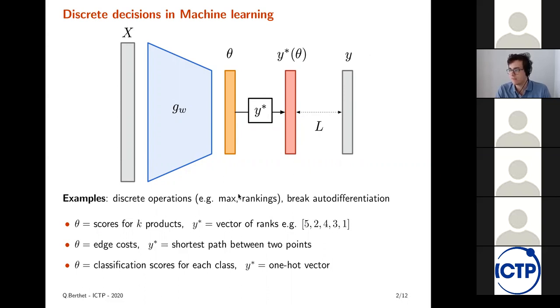And there are many discrete decisions in machine learning. So here you could consider a setting where on some input X, a network or a model computes some theta as output. And then this goes through a discrete decision box that solves maybe an optimization problem. And you get a Y star of theta that must be compared to Y. So there are many examples of such discrete operations.